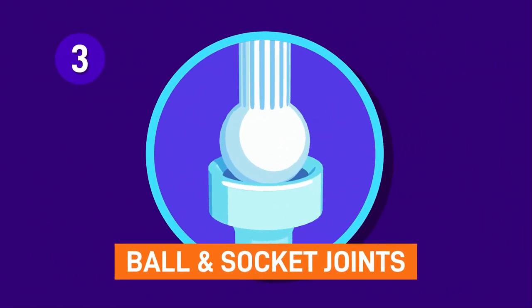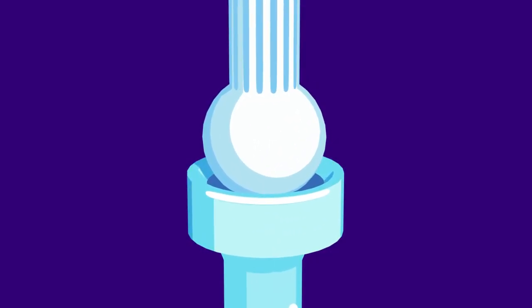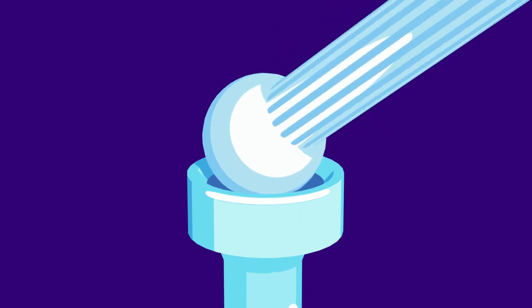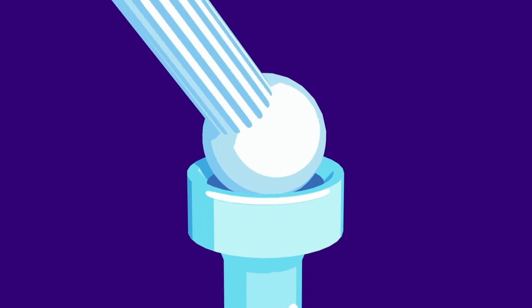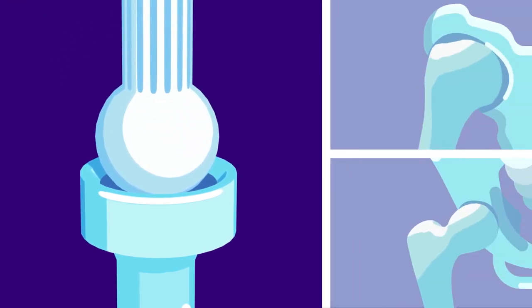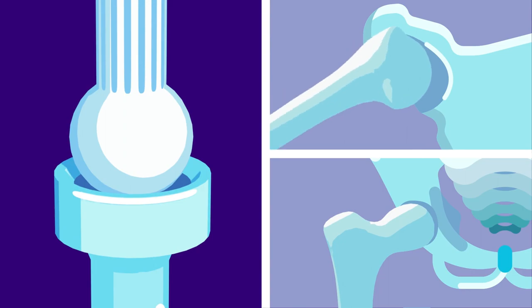Ball and socket joints. Ball and socket joints provide rotation. They are the most mobile of the rotation joints, allowing a wide range of motion, and are called multi-axial joints. The examples of these are shoulder and hip joints.